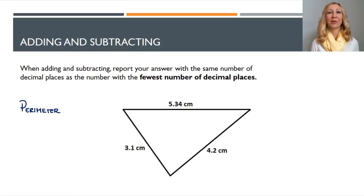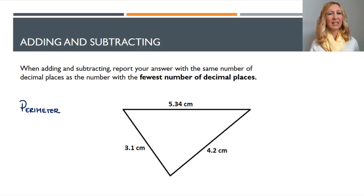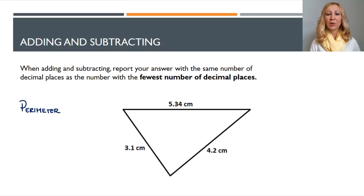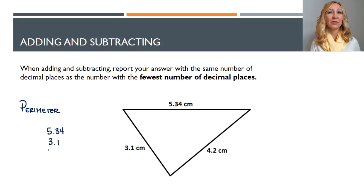That sounds like a lot of words, so we're going to go through and explain what this rule really means. Say we're measuring the perimeter of a triangle. One person measures one side with a very precise ruler that measures to the nearest hundredth place, getting 5.34 centimeters. The other person measures the other two sides with a less precise ruler, getting 3.1 centimeters and 4.2 centimeters — two different rulers with two different amounts of precision.